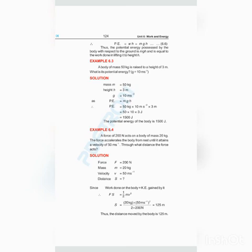Example 6.3: A body of mass 50 kg is raised up to the height of 3 meters. What is the potential energy? You are given mass is 50 kg, height is 3 meters, g is 10 meter per second square. You have to find out potential energy. Formula of potential energy is mgh. By putting the values, 50 into 10 into 3, the answer is 1500 joule. Very simple example, I hope you all understood.